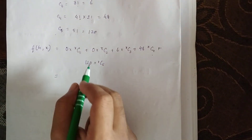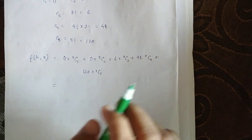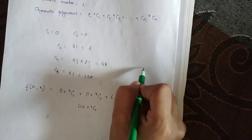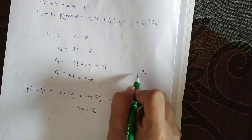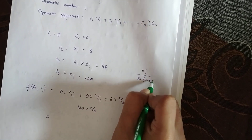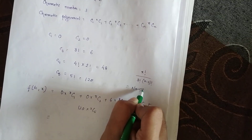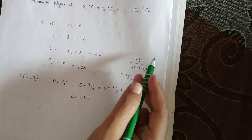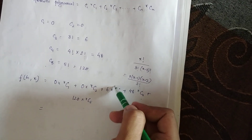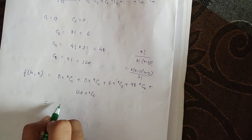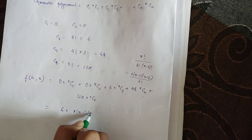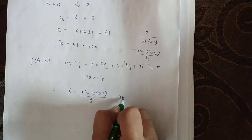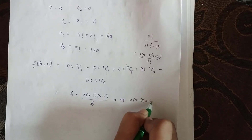Here we use the combination formula. Simplifying C(x,3): x factorial divided by 3 factorial times (x minus 3) factorial gives x(x−1)(x−2) divided by 6. So the c3 term becomes 6 times x(x−1)(x−2) divided by 6. The c4 term becomes 48 times x(x−1)(x−2)(x−3) divided by 24.